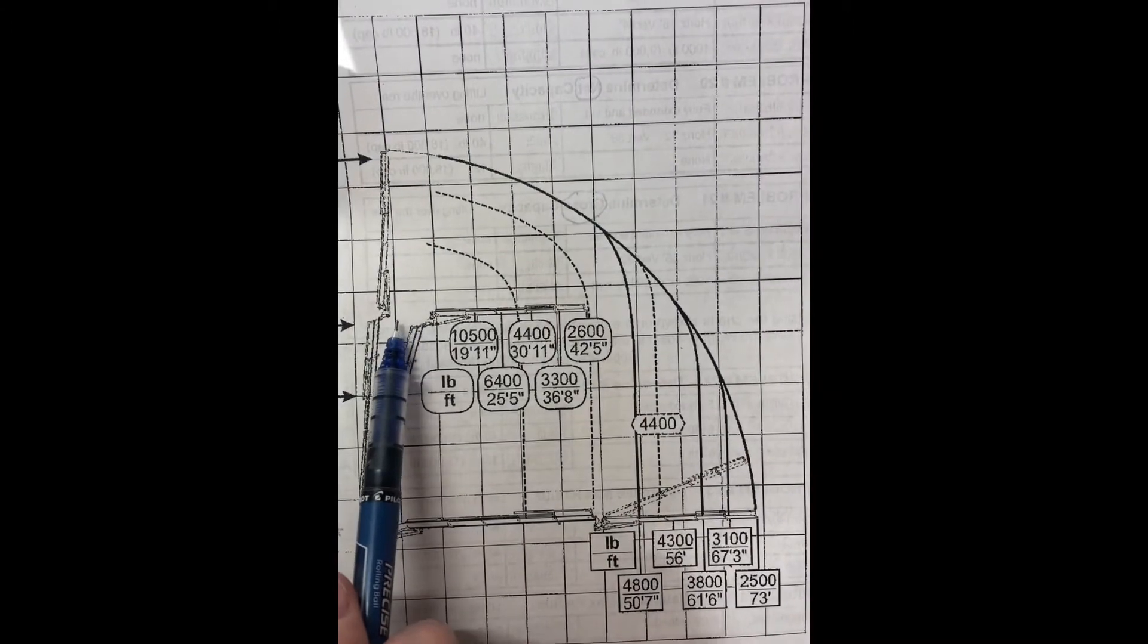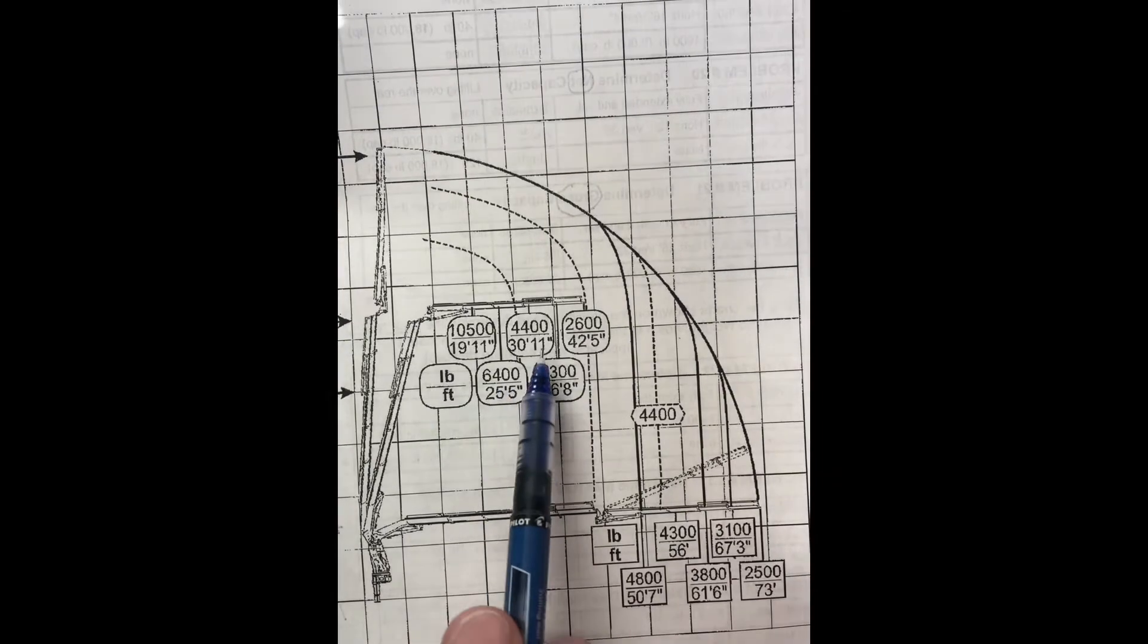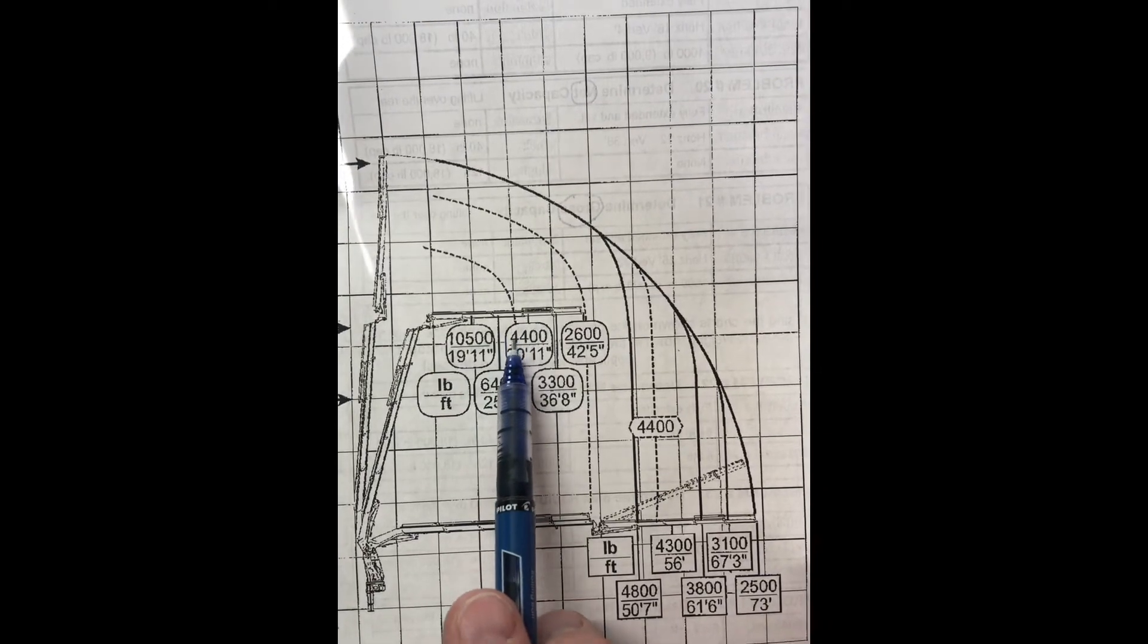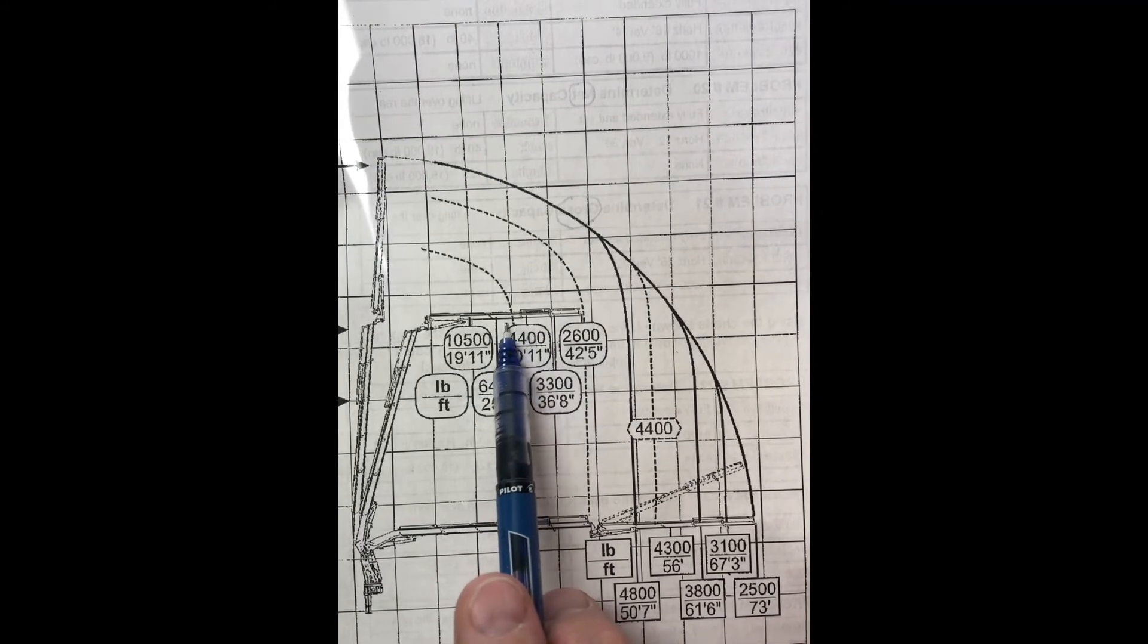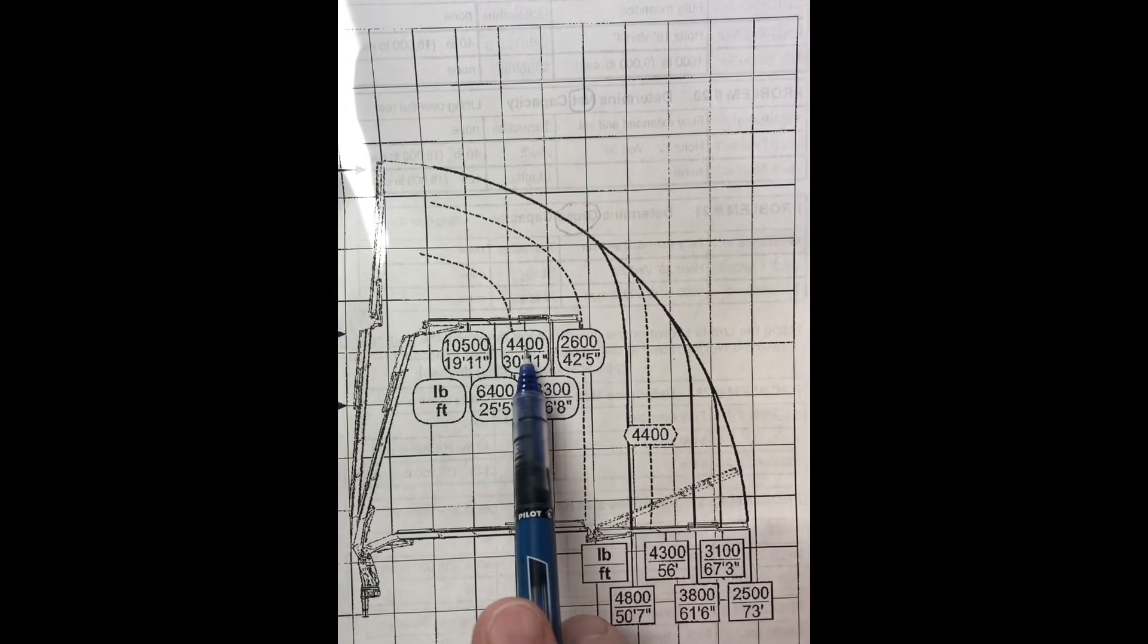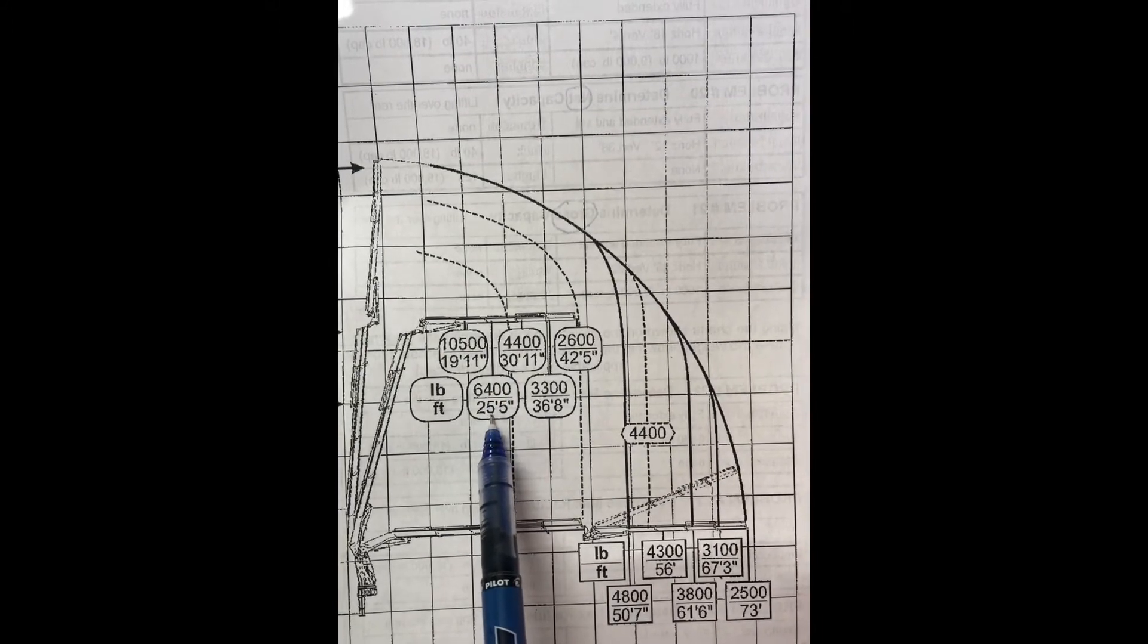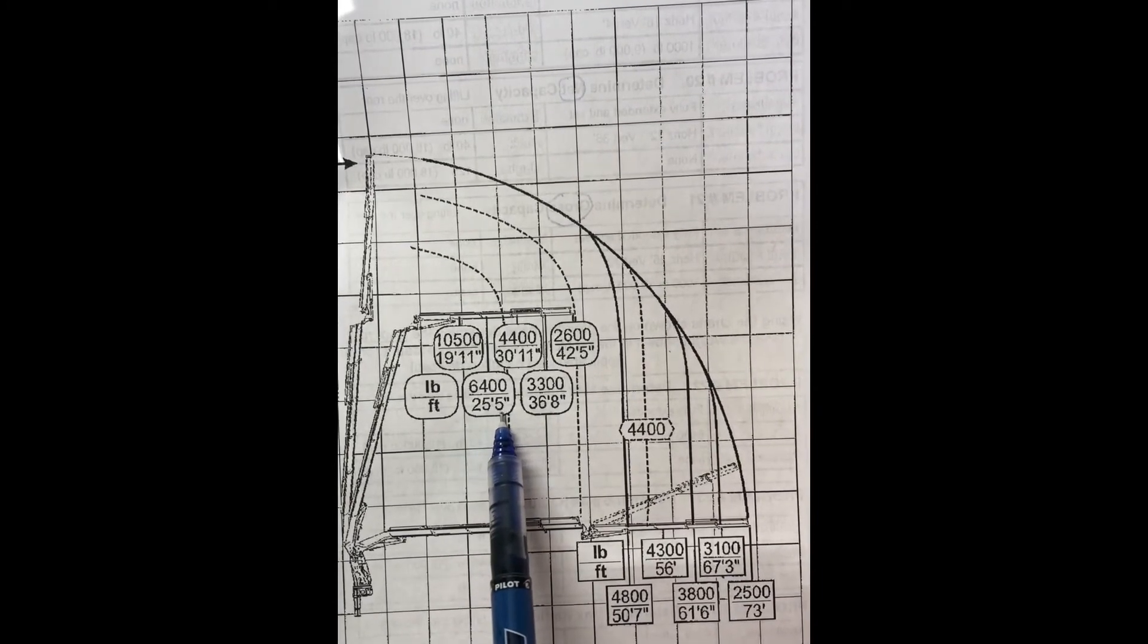So it's going up vertical. You have all these max capacities. We're looking for 5,400. Where's 5,400 going to land? It's going to land between 4,400 and 6,400. So 5,400 is too heavy to get there because that only does 4,400. So it's going to go back here. That's 6,400. 6,400 is your max radius. It's 25 feet, 5 inches. That's your max radius for 5,400 pounds.